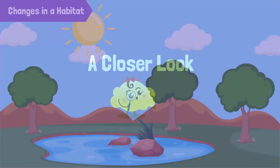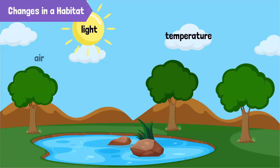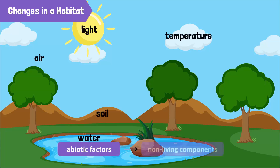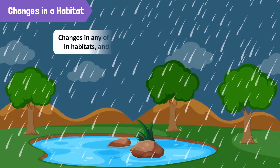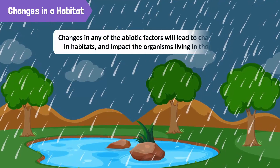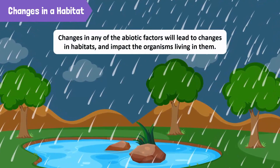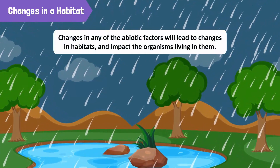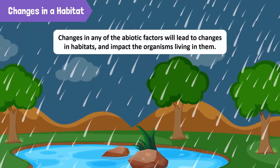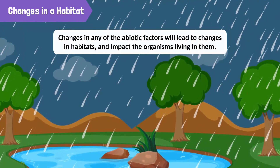We know that light, temperature, air, soil, and water are abiotic factors, or the non-living components of the environment. Changes in any of these factors will lead to changes in habitats and impact the organisms living in them.